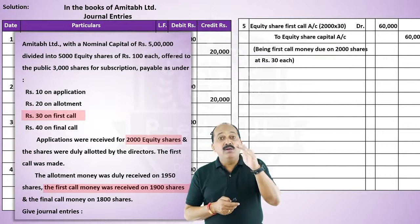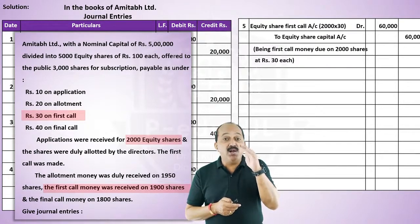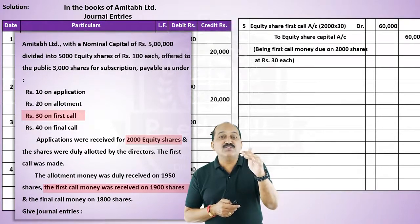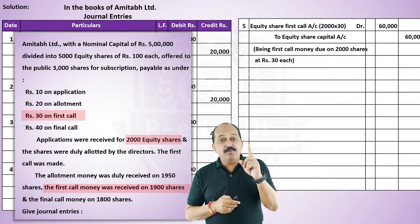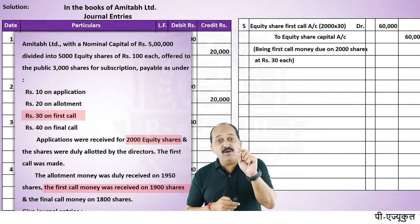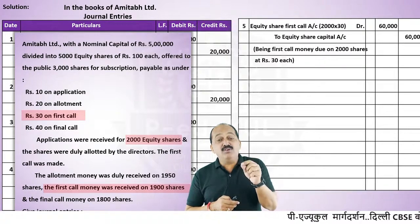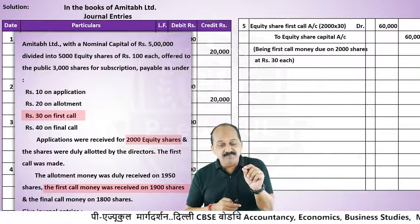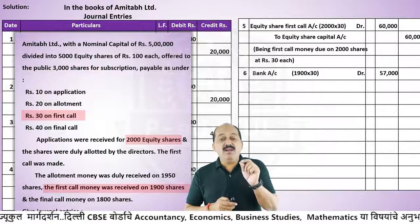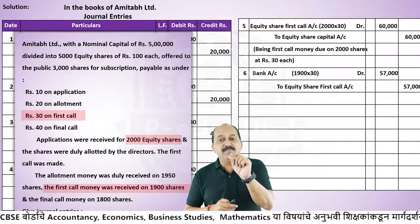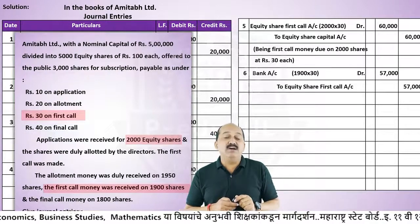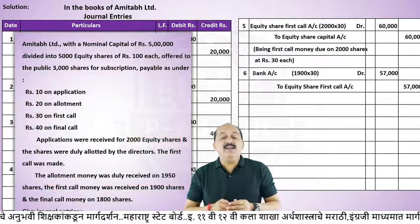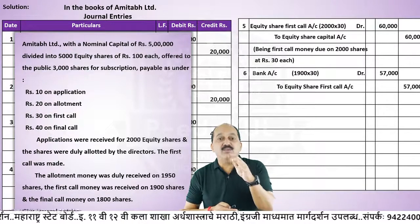First call money received: Bank Account debit 1900 × 30 = 57,000 to Equity Share First Call Account 57,000। Narration: Being first call money received on 1900 shares at Rs.30 each। 2000 shares पे first call due था लेकिन 1900 के ही मिले, याने 100 shares की first call money नहीं मिली।